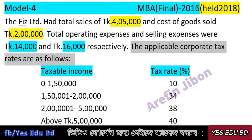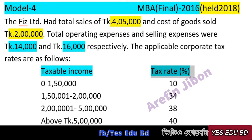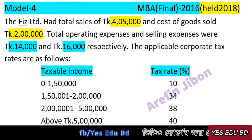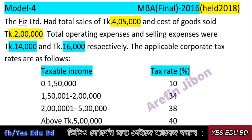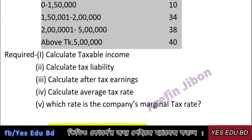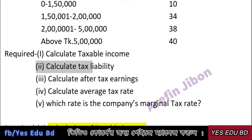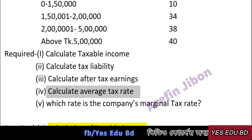The applicable corporate tax rates are as follows: taxable income up to 10,000,000 and up to 54,000,000. Calculate total tax liability, after-tax earnings, and average tax rate.